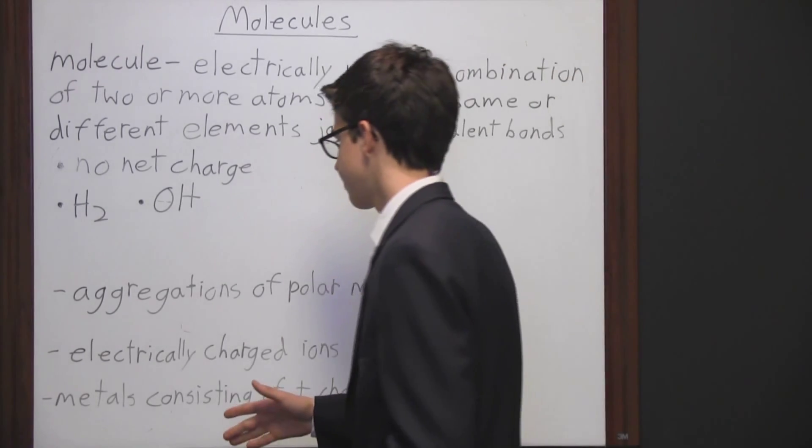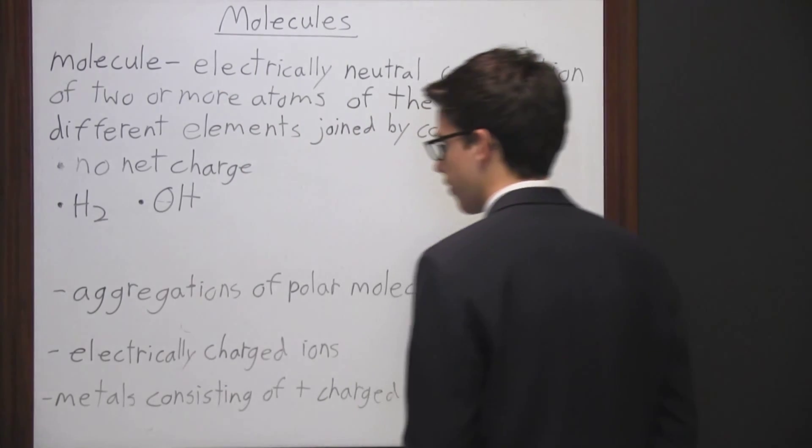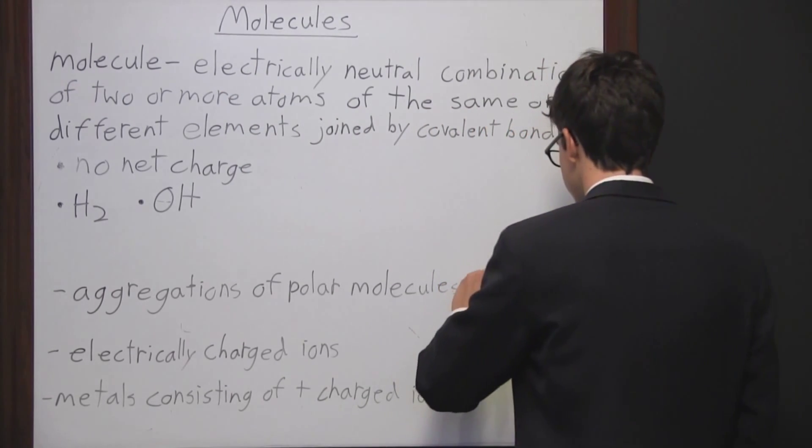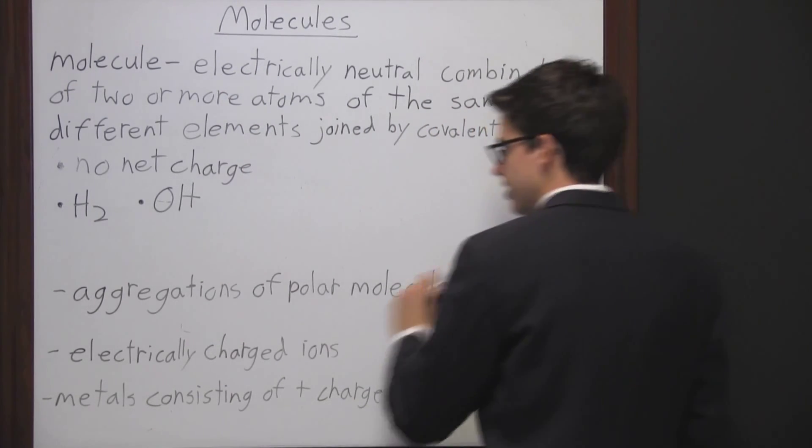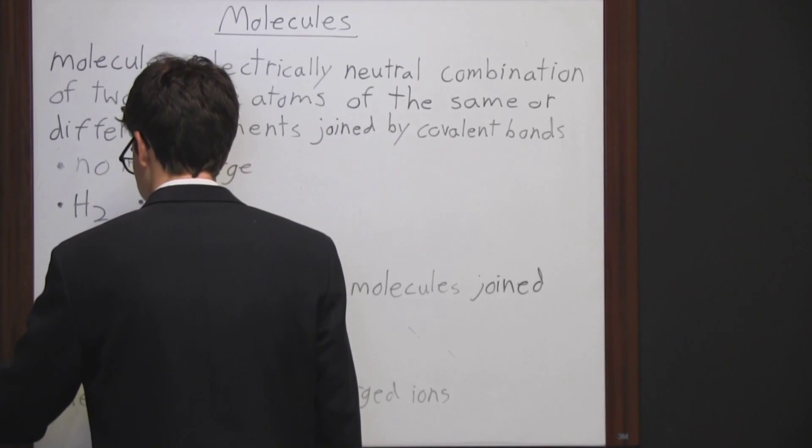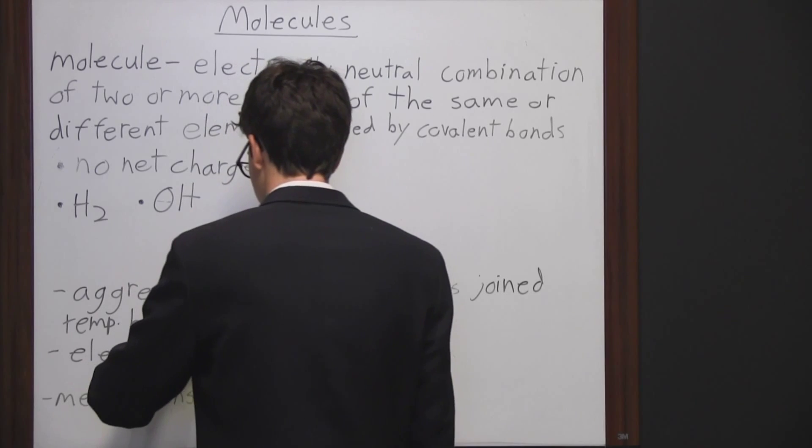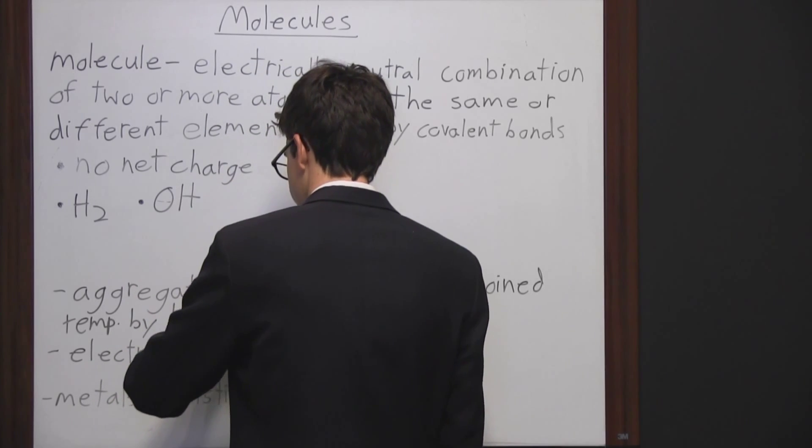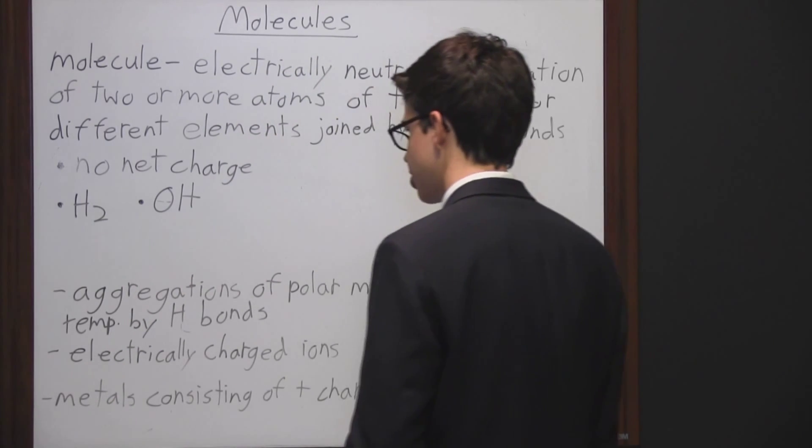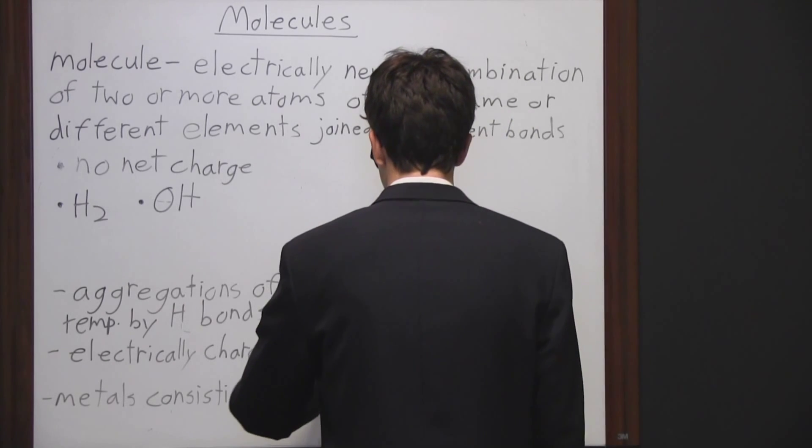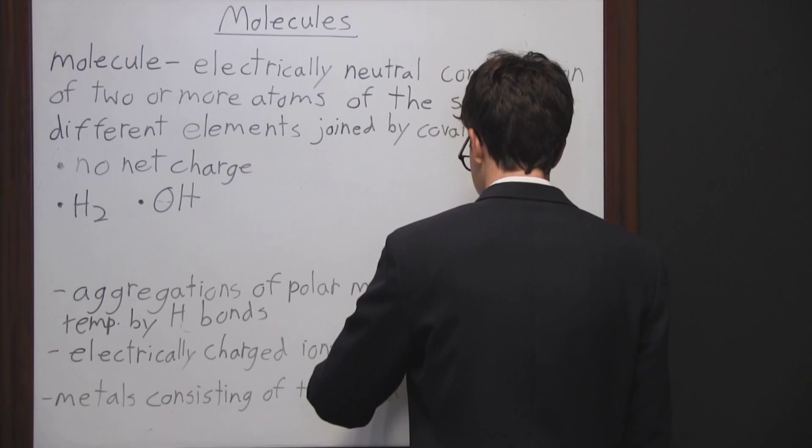So one is aggregations of polar molecules joined temporarily by hydrogen bonds. Another example is electrically charged ions joined by ionic bonds.